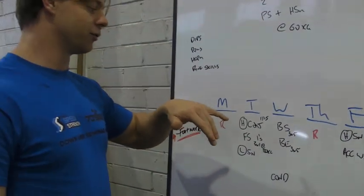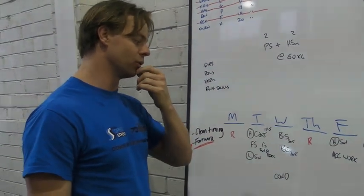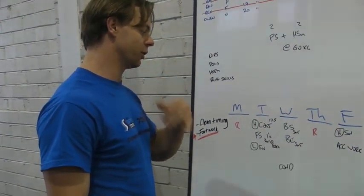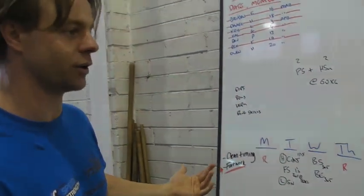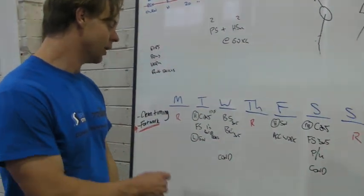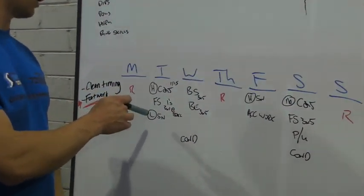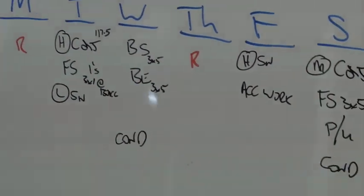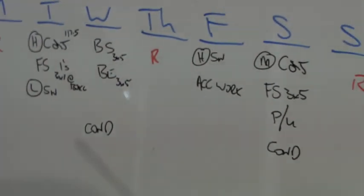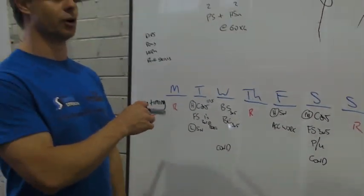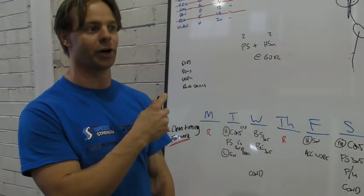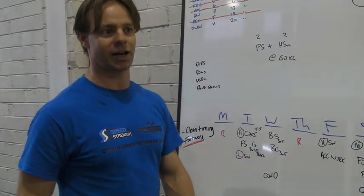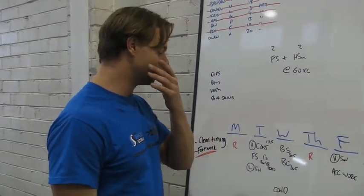He front squatted. We worked up to 130 for singles. Last week he took 127.5, took three singles of that. And then we actually snatch. We have been snatching after our heavy clean and jerks on this day. The reason we went to that was we were missing a few heavy cleans at one point. We just thought, okay, we'll put the snatches behind. That may change in the future.